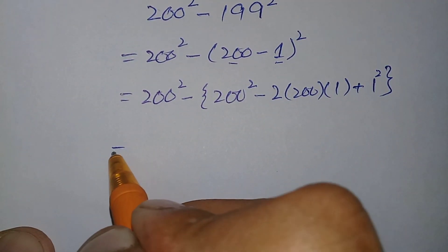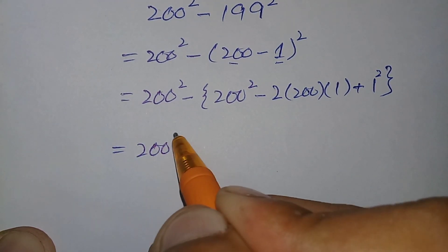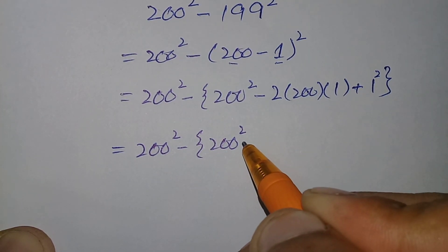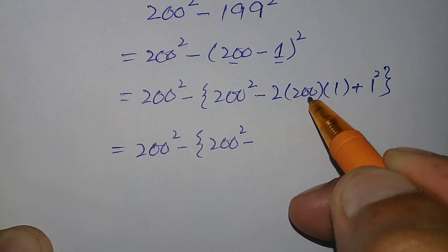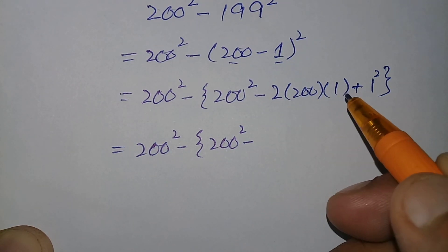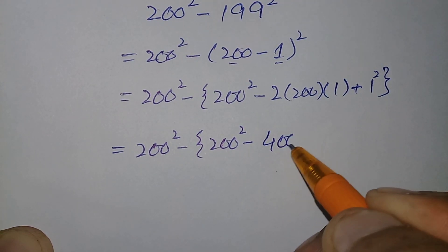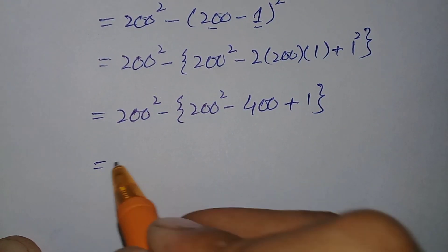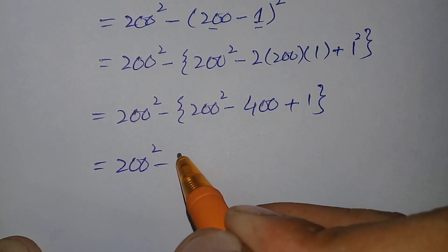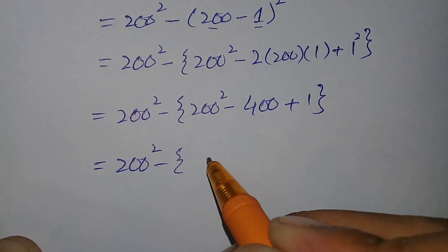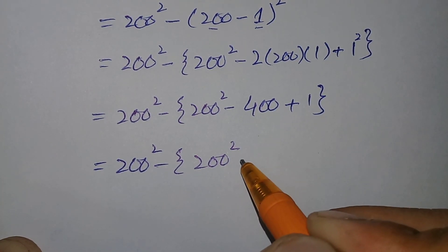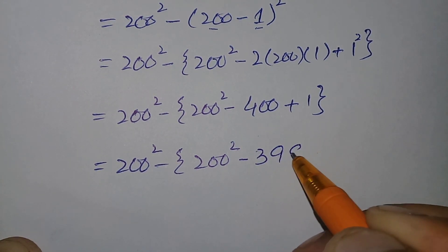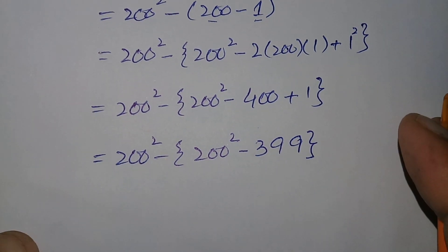Next, we write 200 square the same, then open the parenthesis. We multiply: 200 times 2 is 400, and 400 times 1 is 400, so the 2ab term becomes 400. One squared is 1. Simplifying inside the brackets: minus 400 plus 1 gives minus 399. The braces are closed.